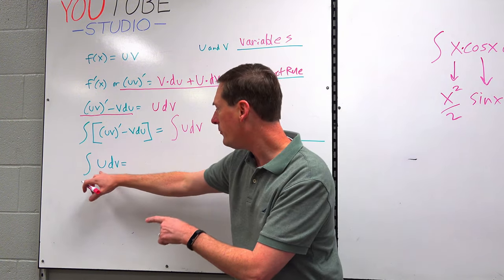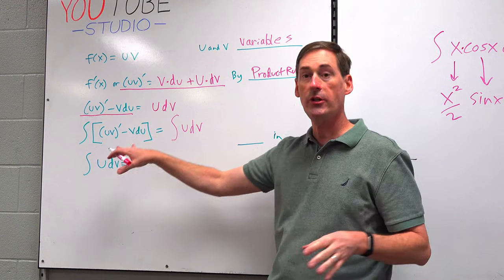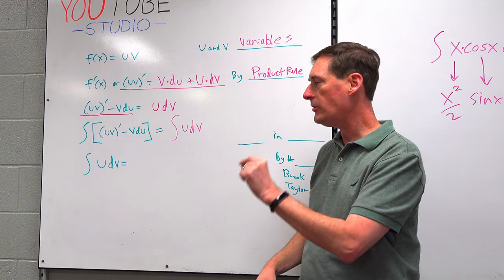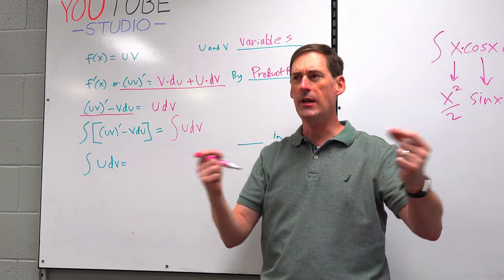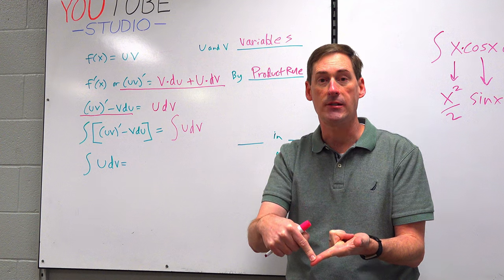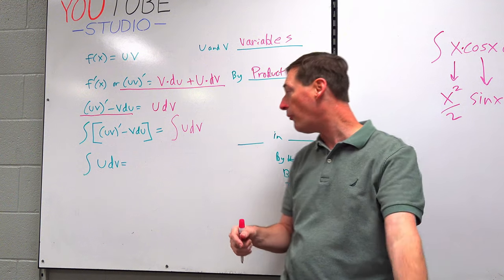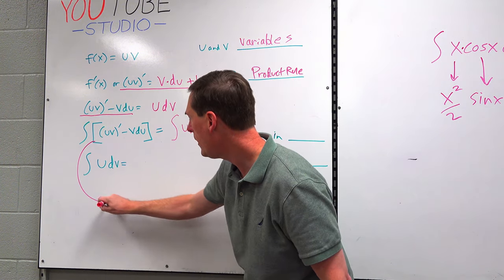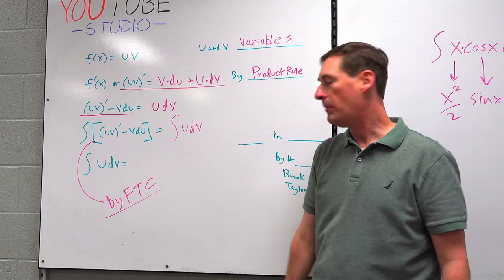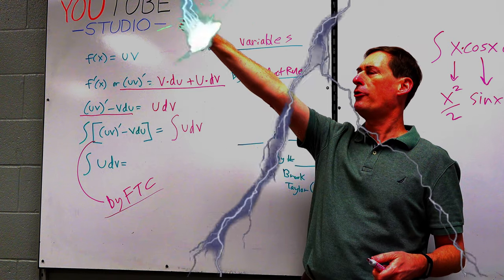The integral of u·dv is here, and we're actually going to integrate it. What is the integration of u·v prime? The integration of the derivative — wouldn't those offset each other? Didn't we say the integration of f prime of x is just f of x? That's called the fundamental theorem of calculus — the FTC for short. By the FTC, the integration of the derivative shall simply be u·v, because the integral and derivative offset each other.